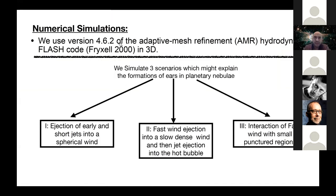Our laboratory is the flash code. We use the three-dimensional hydrodynamical code with adaptive mesh refinement. It's actually recent code. We simulate three scenarios which might explain the formation of ears in planetary nebulae. The first one is the ejection of early and short jets into a spherical dense wind. So we start with a jet, short jet, and shortly after that we blow a spherical dense wind. This actually can fit a common envelope evolution as the stellar system enters to a common envelope evolution.